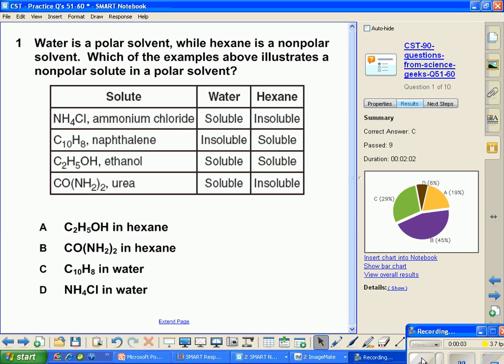This is questions 51 through 60 from the release questions from the state of California for chemistry CSTs. We're looking at question 1, which has been a difficult problem for all classes. What I'm trying to point out on the reasoning is you need to know that water is a polar solvent and hexane is a nonpolar solvent.